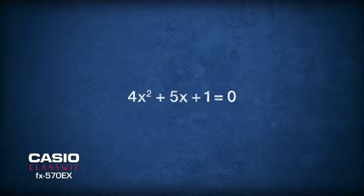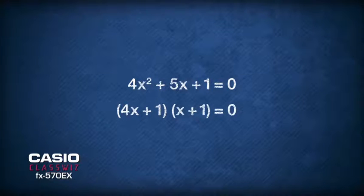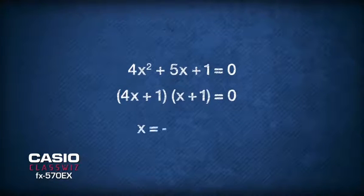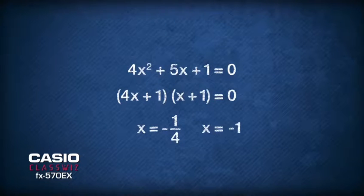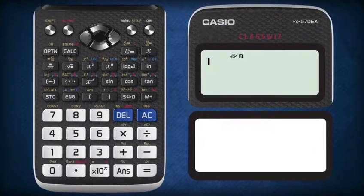Next, we can perform factorization to become (4x + 1)(x + 1) = 0 and solve that x = -1/4 or x = -1. This is where the Casio Class Wiz comes in handy. We can use it to find the answers for the factorization.